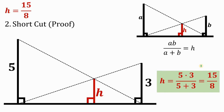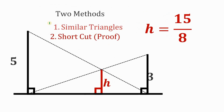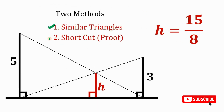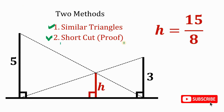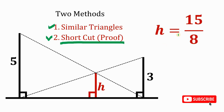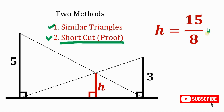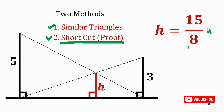Therefore, given this figure, using similar triangles we have proven the shortcut and confirmed our answer: H equals 15 over 8 units. And as always, we are done.